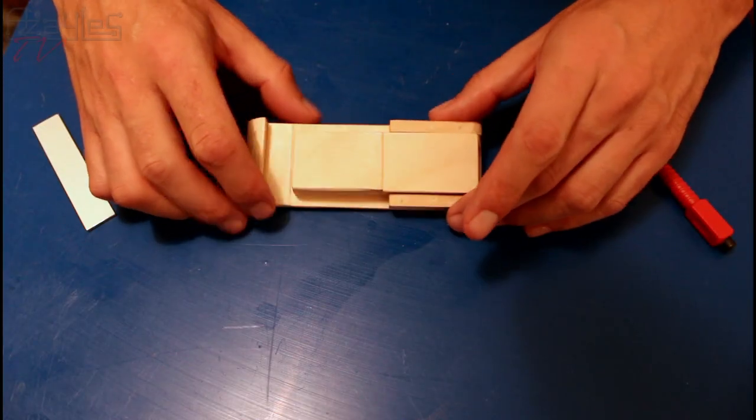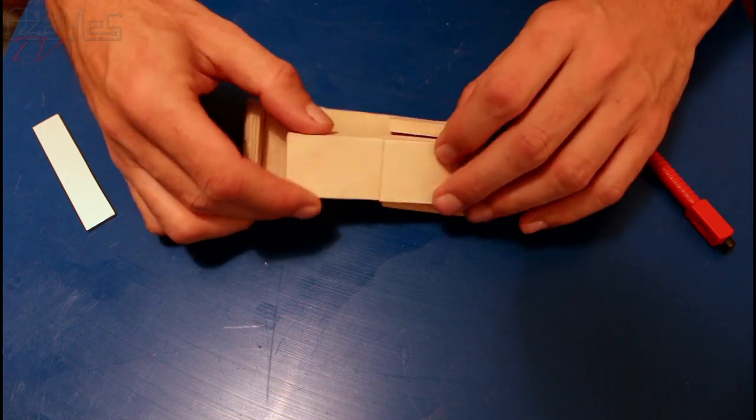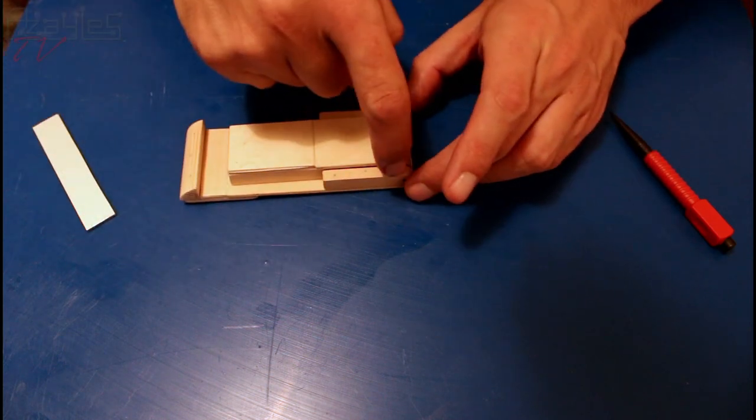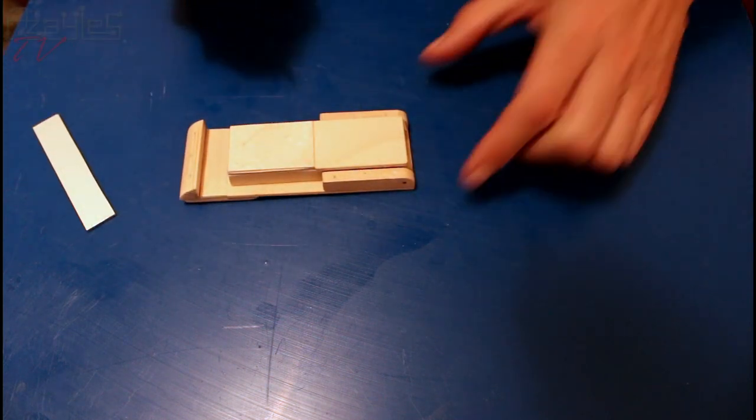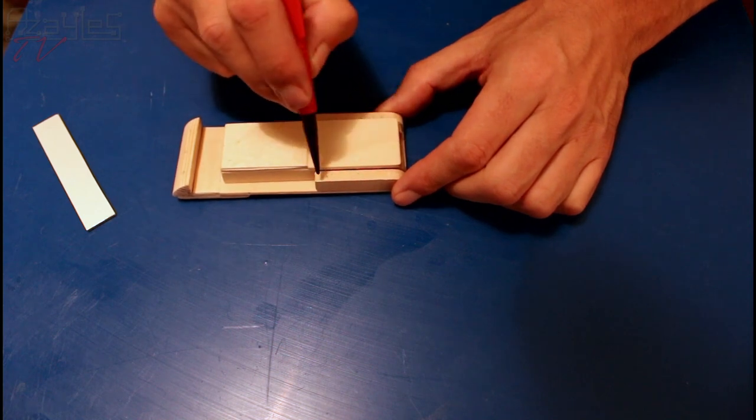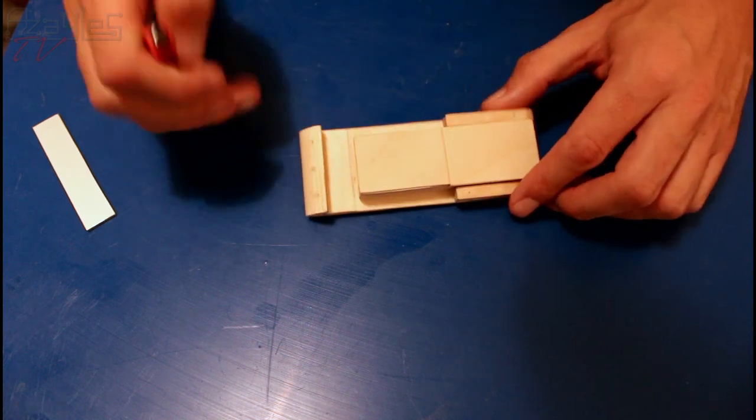Here we are all glued together. I've got extra bits there. I've put some cocktail sticks through here and the end here to strengthen it. Glued those in place.